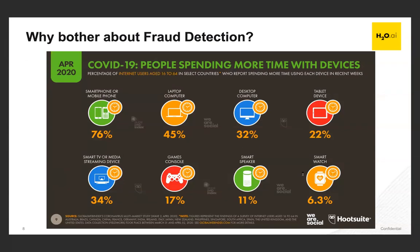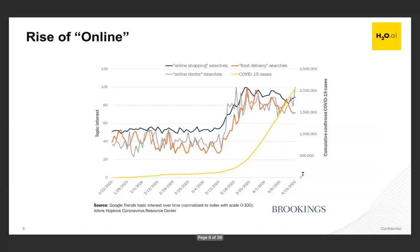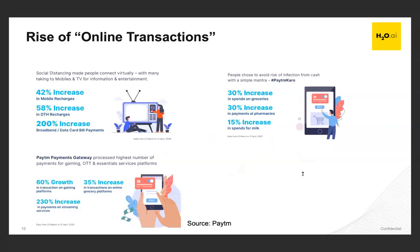Why bother about fraud detection? We were already in an S-curve of digital transformation, and with COVID in 2020, this accelerated. We've started spending more time online — the rise of online shopping, online food delivery, and more. Wherever there's an explosion of digital transformation, there's also a rise in loopholes and exploitations. For example, Indian payment provider Paytm saw a massive increase in online payments because of COVID, and this trend is seen across multiple providers and mediums.